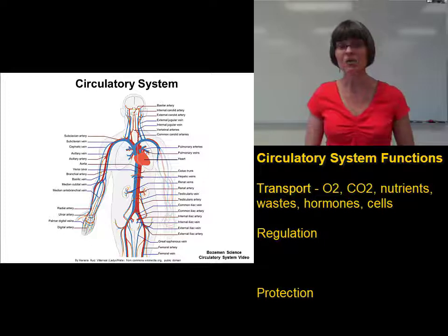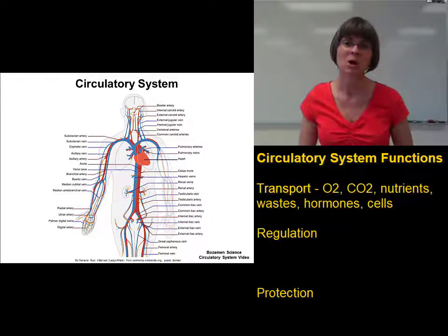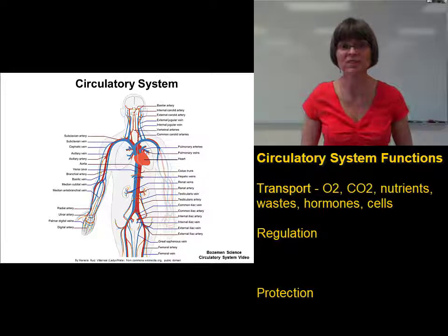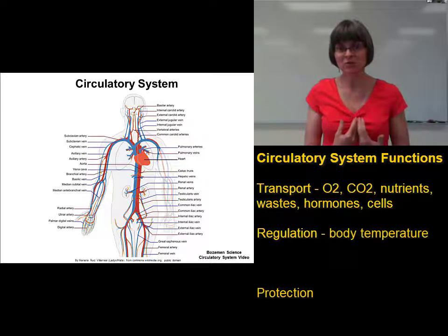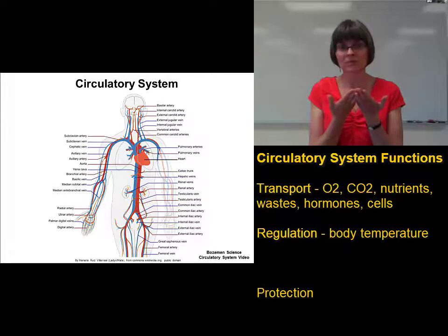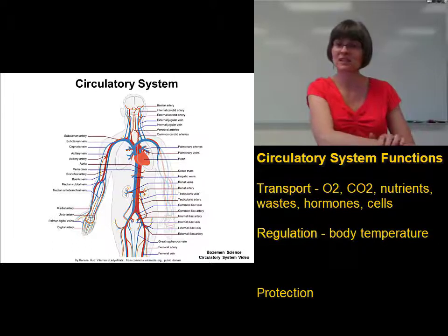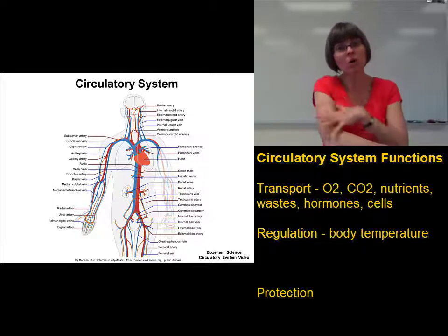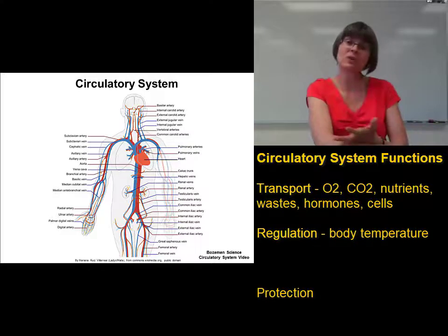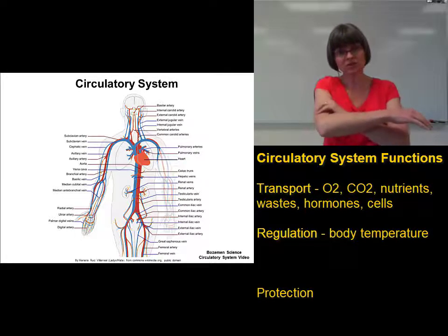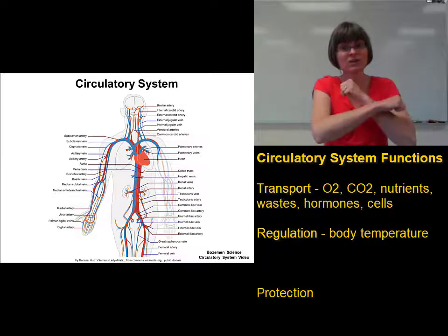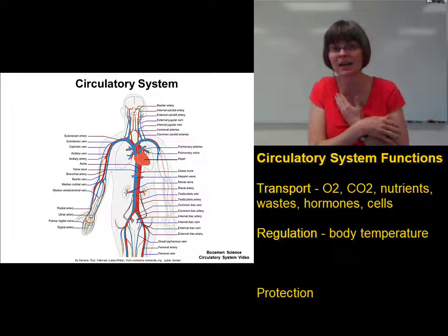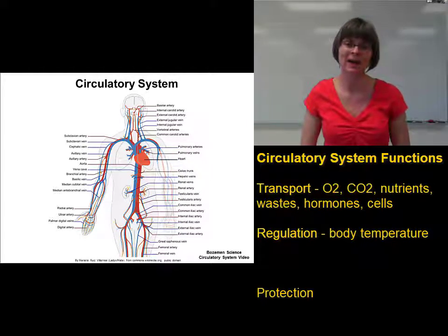The second category of functions for the circulatory system is regulation, and there are several important things it regulates. One of those is body temperature. When your body temperature gets too warm, we dilate blood vessels in the skin, bringing more blood to the skin to radiate out more heat. By controlling whether we dilate blood vessels to get rid of heat or constrict them to maintain heat, the circulatory system has quite an impact on body temperature.